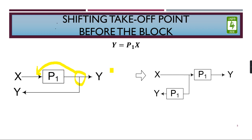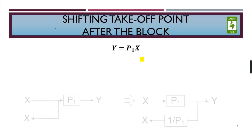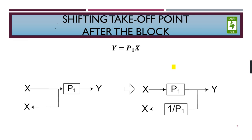To move the takeoff point after a block, we have to add a reciprocal of the block in the path, in the feedback or feedforward path, whichever it is in the takeoff point.